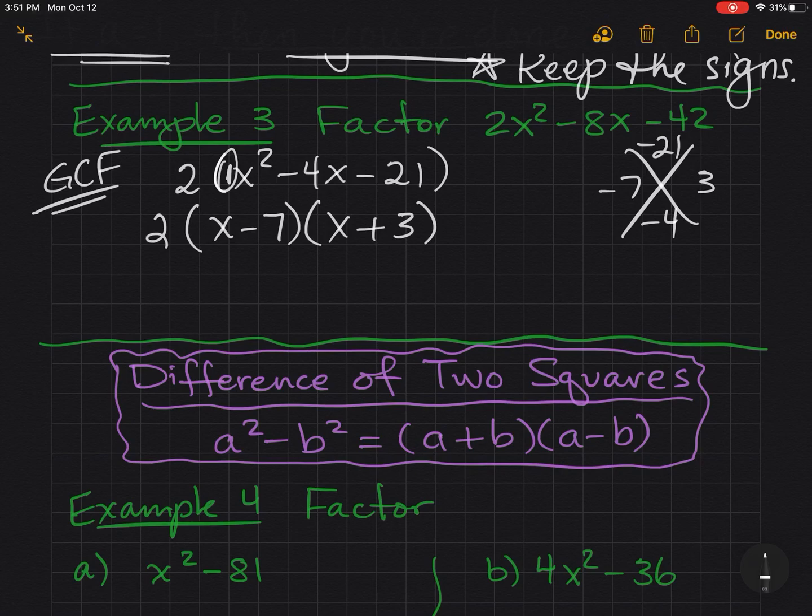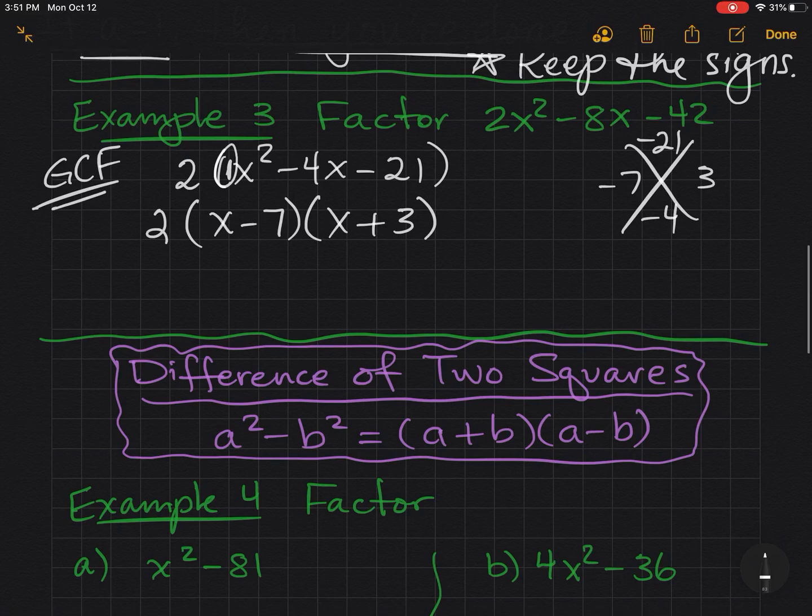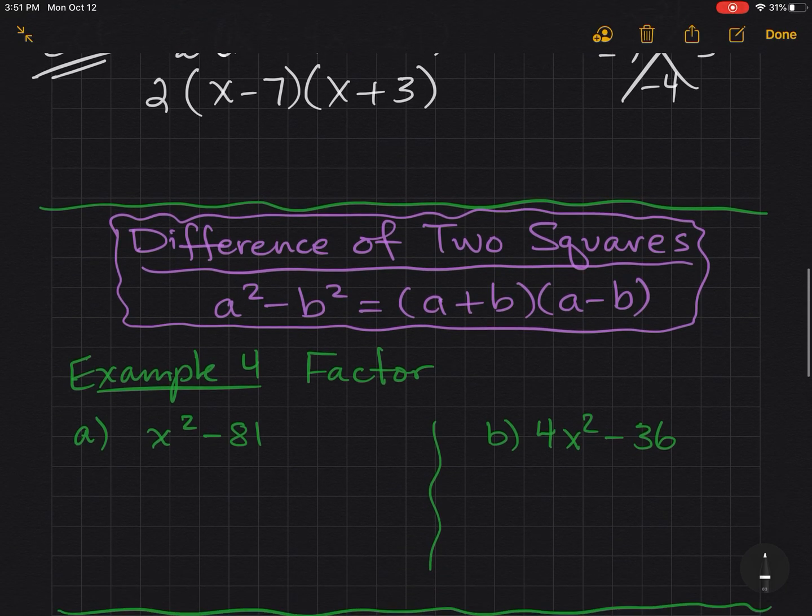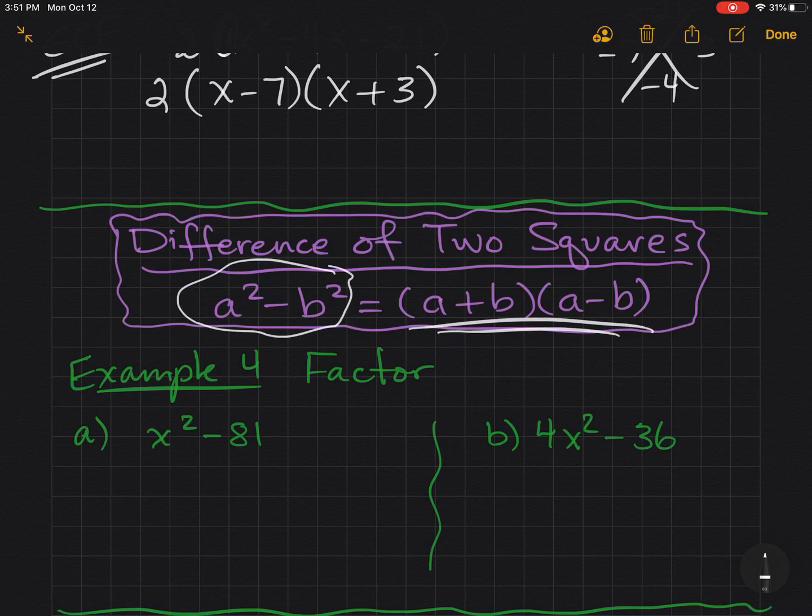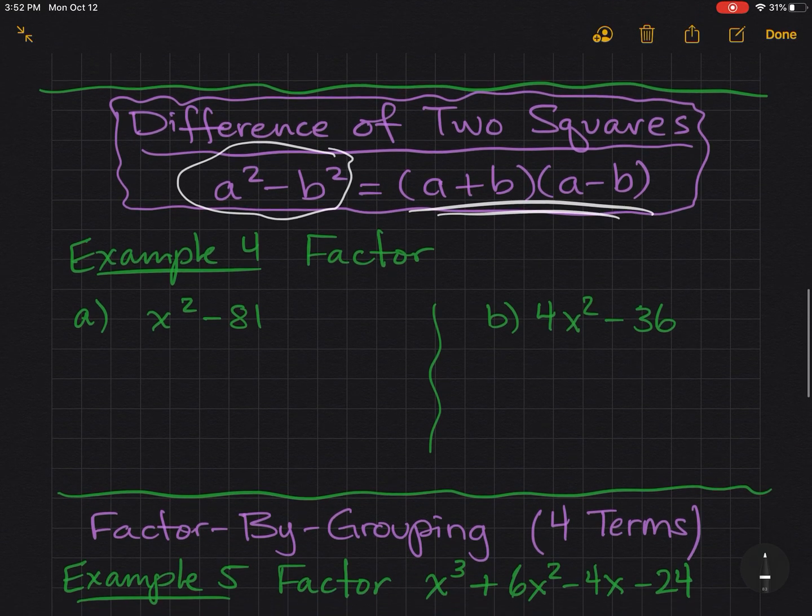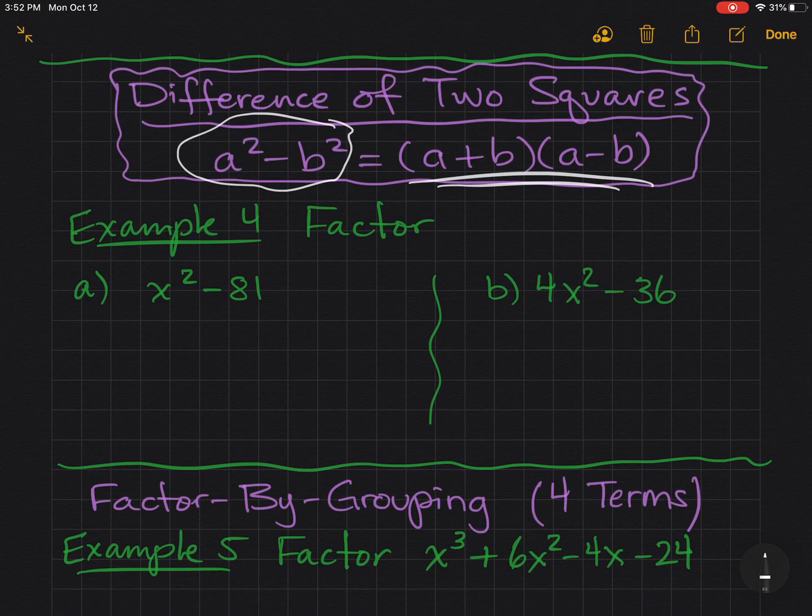Now let's review the difference of two squares. a squared minus b squared equals a plus b times a minus b. So if we factor something that looks like this, it'll be a quick and easy factor. And let me show you what I mean with example 4.